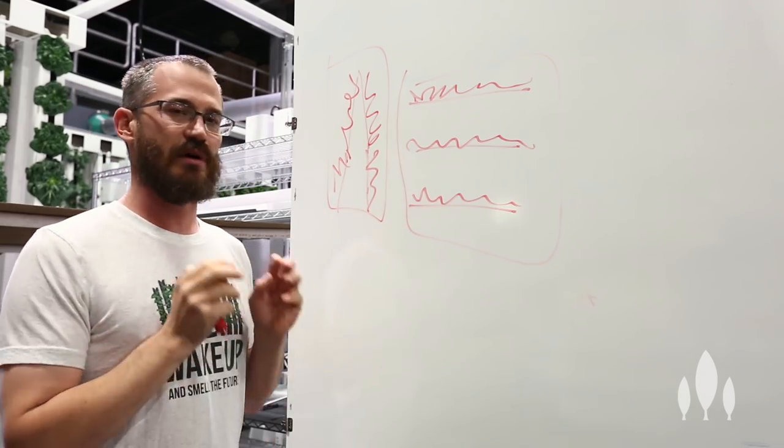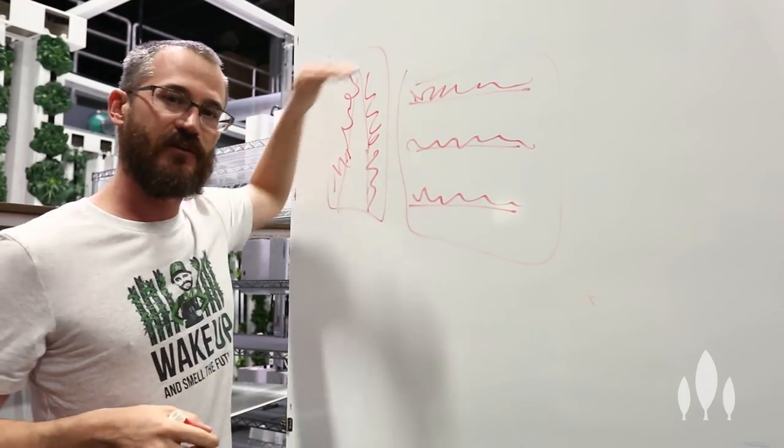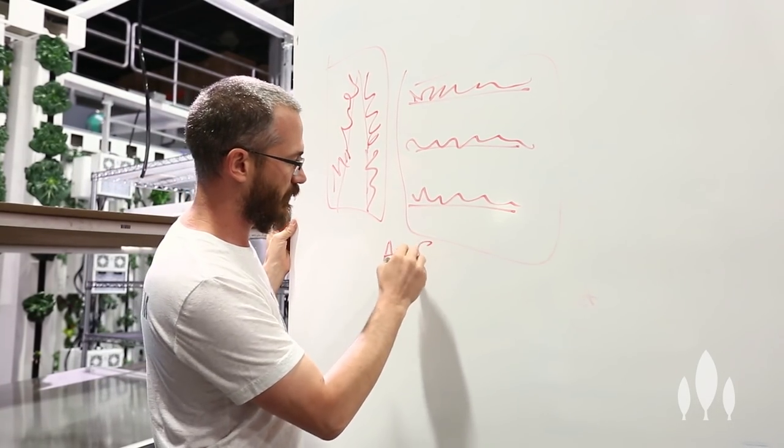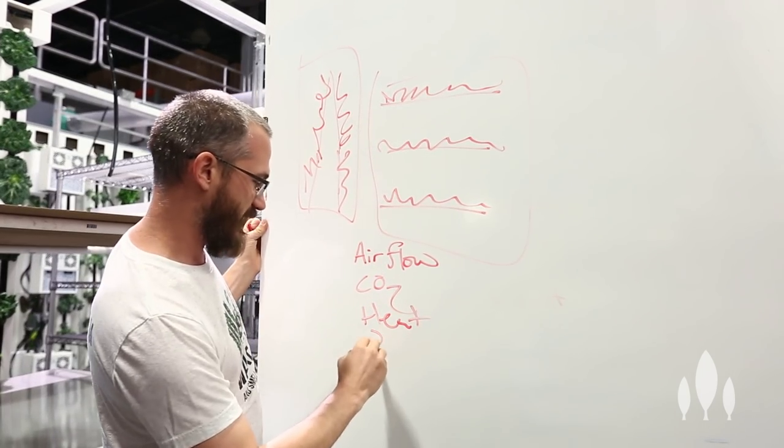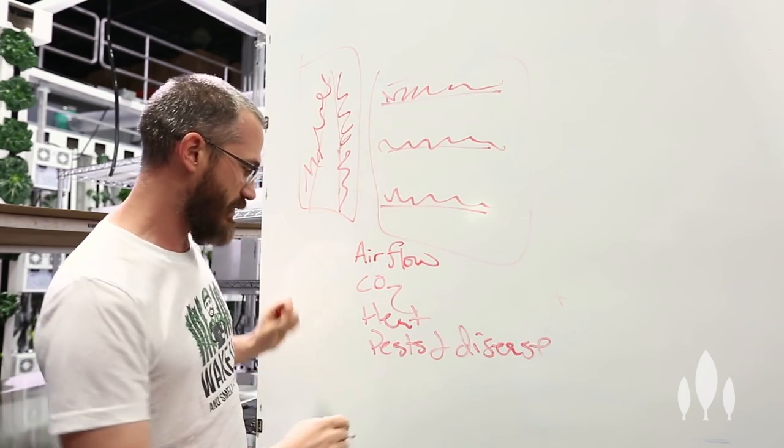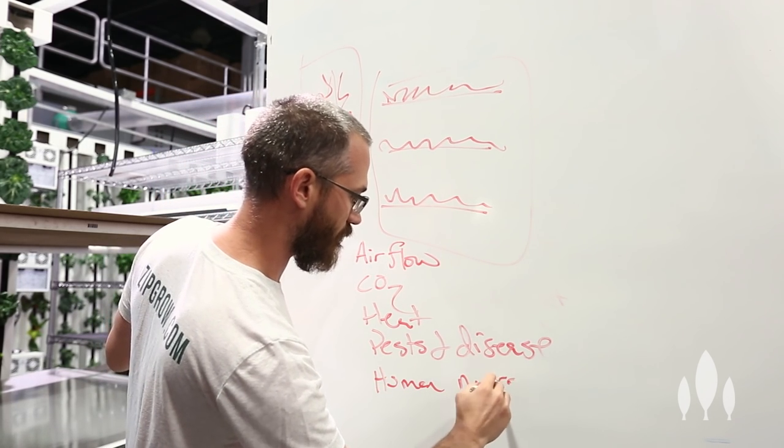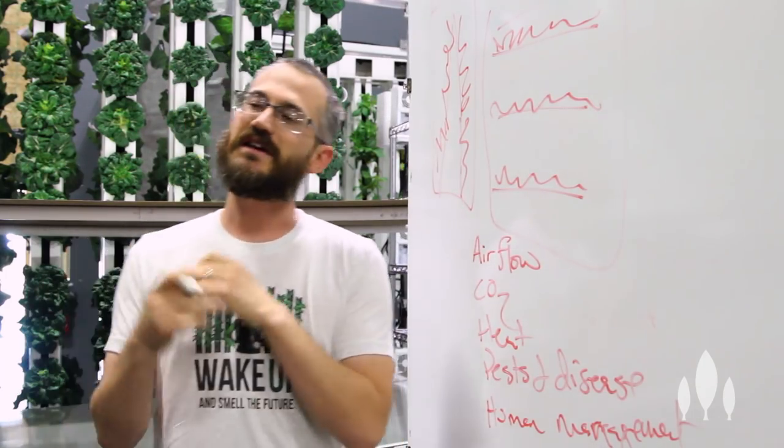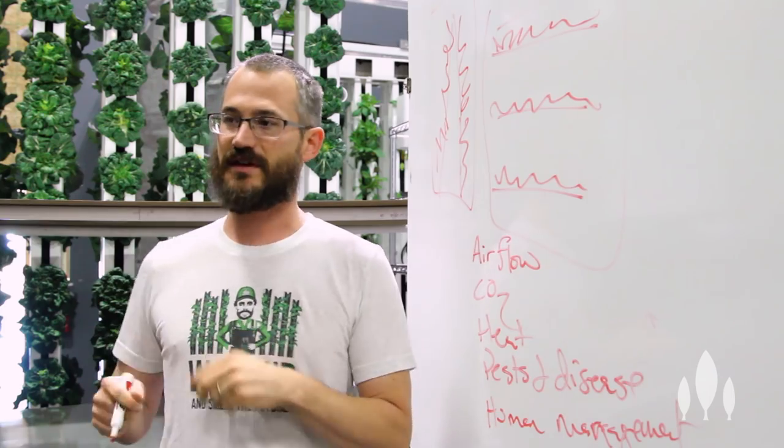So today, we're going to get into labor a little bit, but we're mostly going to talk about management and the differences between these two different types of production and how they impact airflow, CO2, heat, pests and disease, and then the human management aspects of these systems. We're going to leave labor and labor costs out of it. That's going to be the next video. Today, we're just going to talk about these things.